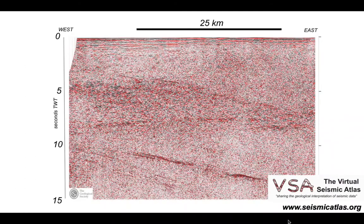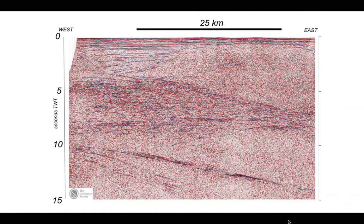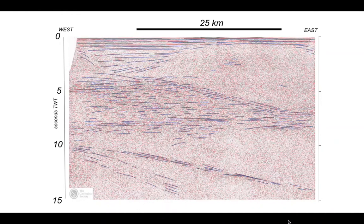We're going to look at the WINCH 1 profile from the BIRPS dataset. It's a classic profile recorded for 15 seconds, which should therefore image the whole of the continental crust. Let's go about building an interpretation. The first thing to do is create a simplification of this image — it's pretty noisy — so we do this by tracing out the most prominent reflectors with lines, trying to ignore multiples and diffractions, although in this image there are very few. Here's a line tracing of the prominent reflectors; let's fade out the seismic a little so we can see these picks more clearly.